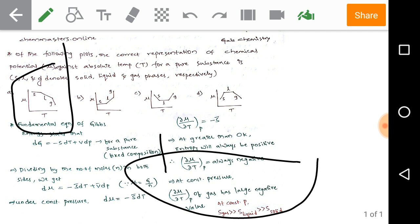That means option A is the correct plot for chemical potential mu against absolute temperature. Right, thank you.